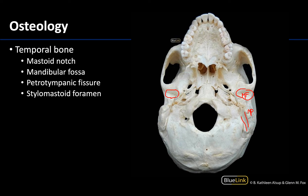Now just posterior to the mandibular fossa there is going to be a slit-like fissure referred to as the petrotympanic fissure. It is through this fissure that the chorda tympani will exit the skull, so anything just posterior to the mandibular fossa will be the petrotympanic fissure.